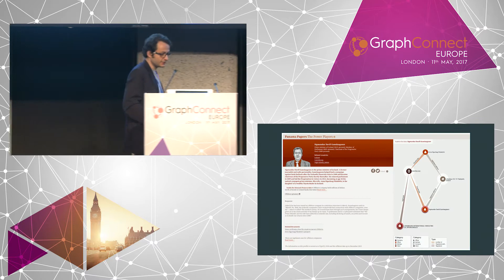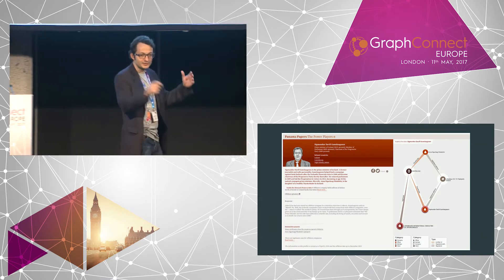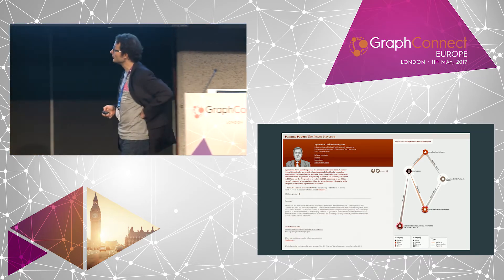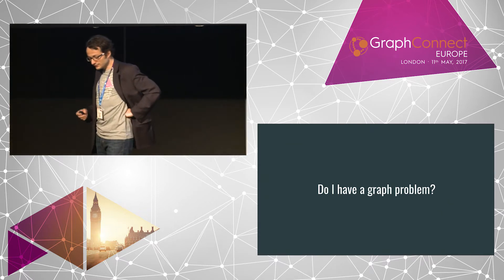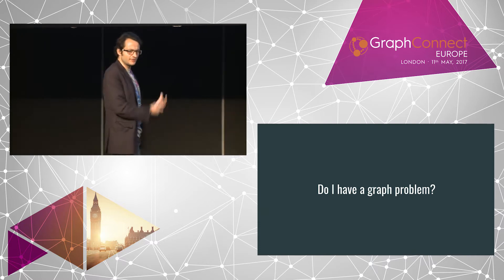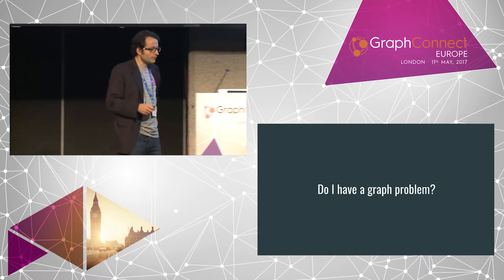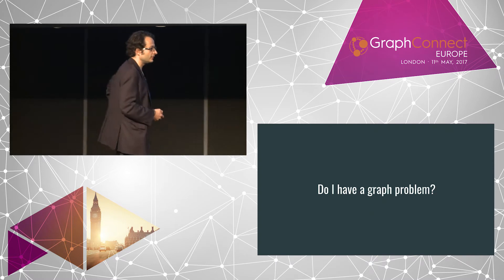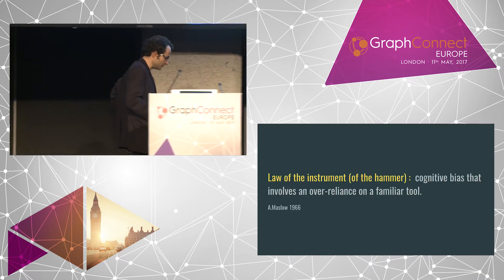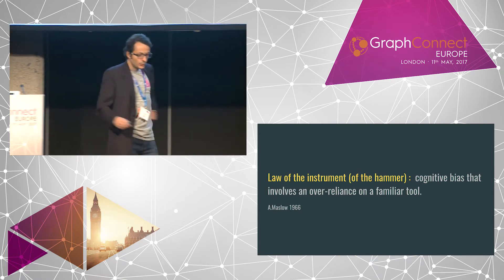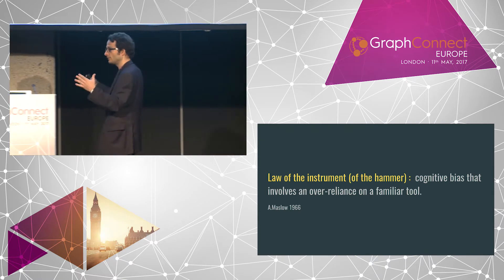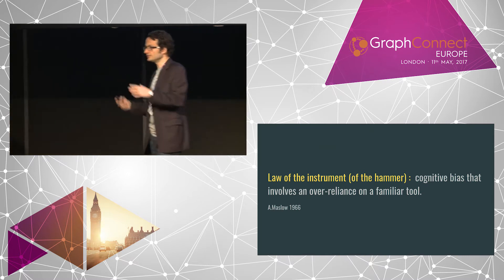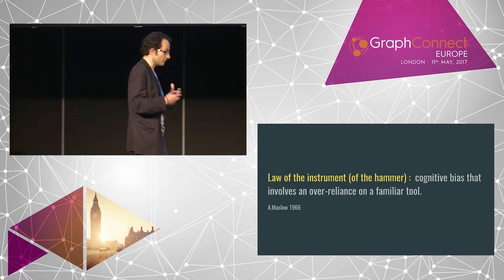In the case of the Panama Papers, this led to arrests and resignations from prime ministers. But then the question is: people will say, 'That's great, but I'm in finance or insurance — do I have a graph problem? I don't have people connected to people.' And we have a problem: when all you have is a hammer, everything looks like a nail. We've been doing relational, thinking tabular, thinking in sets for so long that we tend to think of data as datasets. That works in some cases, but we're missing other very interesting approaches.